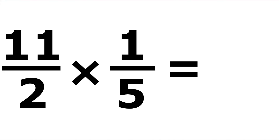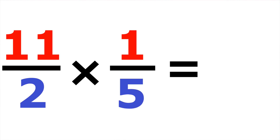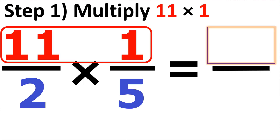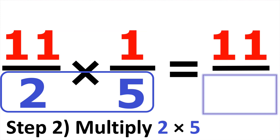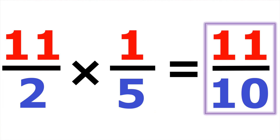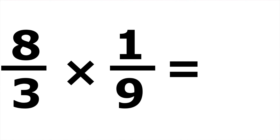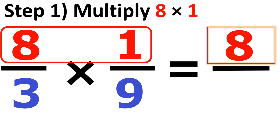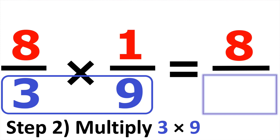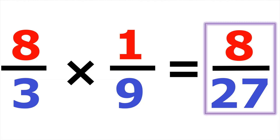Number twenty: eleven over two times one over five. Starting up top: eleven times one is eleven. At the bottom, two times five gives us ten. The answer is eleven over ten. For number twenty-one, we have eight over three and one over nine. Up top, eight times one gives us eight. At the bottom, three times nine gives us twenty-seven. So the answer is eight over twenty-seven.